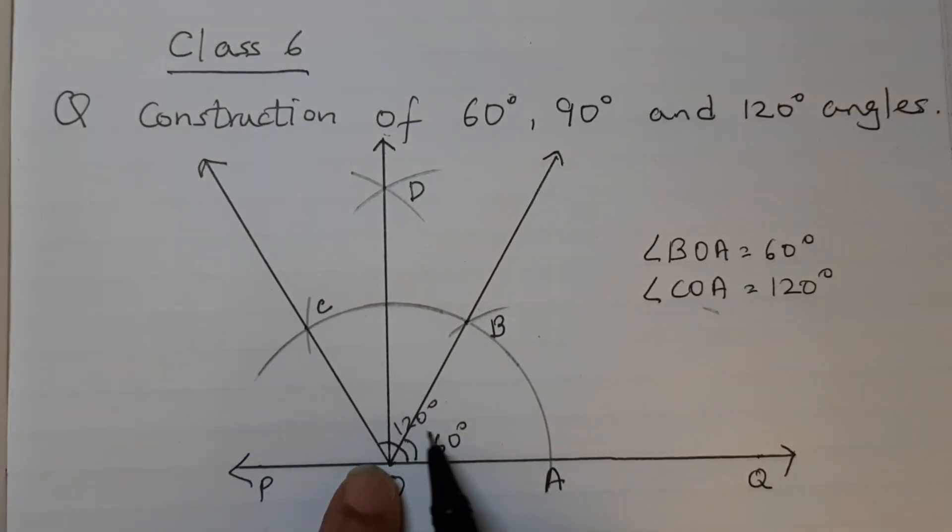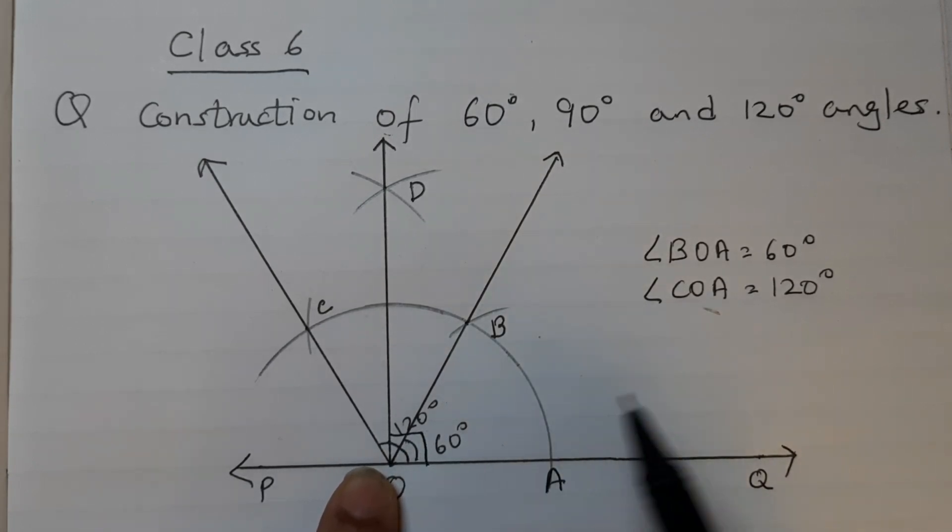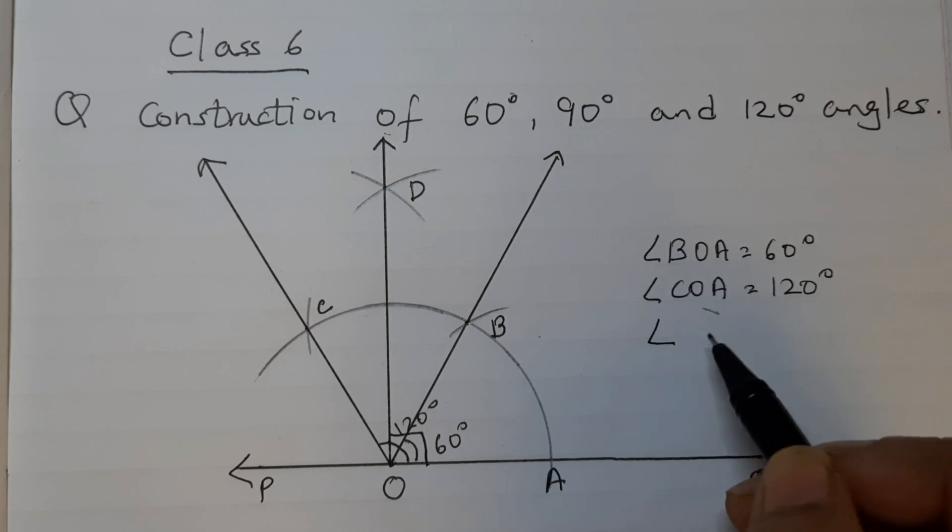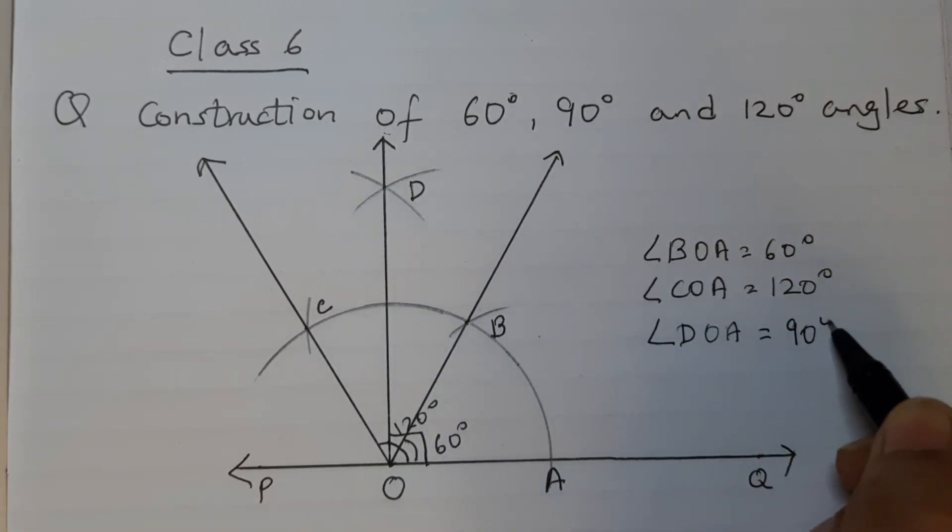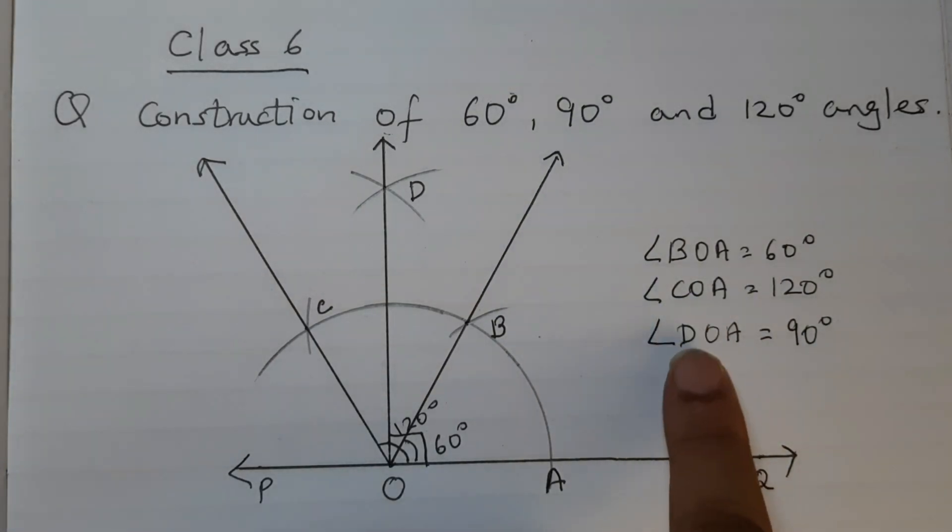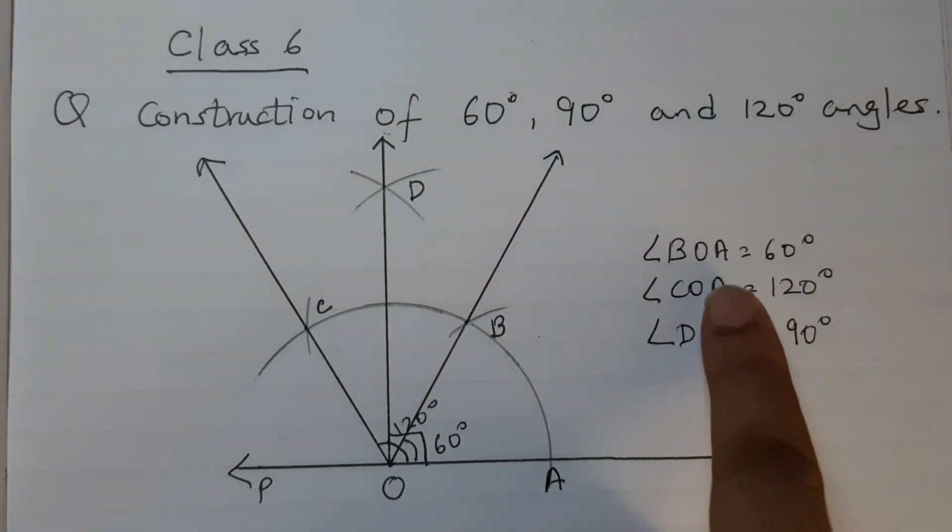Now, this angle formed is 90 degrees. This is 90 degrees. So we can write angle DOA is equal to 90 degrees. So we have got the required angles, 60 degrees, 120 degrees and 90 degrees.